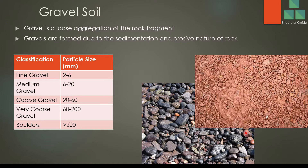Let's discuss each type of soil in detail. Gravel. What is gravel? Gravel is a loosened aggregation of rock fragments, formed due to sedimentation and erosion of rock — essentially a weathered rock material. We can observe common gravel types in the figures shown. The basic parameters of gravel are categorized by particle size: fine gravel is 2 to 6 mm, medium gravel is 6 to 10 mm, coarse gravel is 20 to 60 mm, and very coarse gravel is 60 to 200 mm in size.